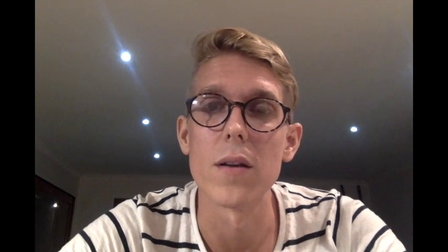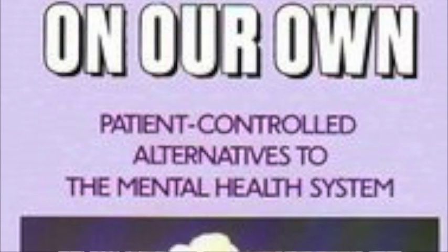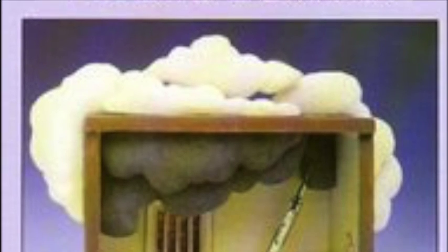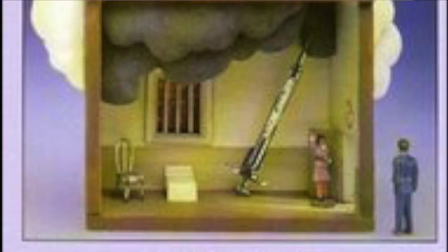In many of these rights movements, people can look back to a key text that helped motivate them. For the psychiatry survivors movement, it was a book by Judy Chamberlain, written in 1978, called 'On Our Own.' I just want to read out a portion of the text.